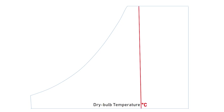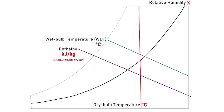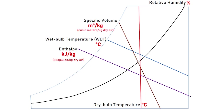Let's look at a simplified version to review the parameters and their units. Dry bulb temperature is in degrees Celsius, wet bulb temperature is also in degrees Celsius, relative humidity is in percentage, enthalpy is in kilojoules per kilogram of dry air, specific volume is in cubic meters per kilogram of dry air, and humidity ratio (or absolute humidity) is in kilograms per kilogram of dry air. This gives an overall picture of what can be read from the psychrometric chart.